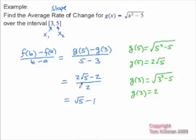And if you want, you can get this into your calculator. Square root of 5 is really close to square root of 4, so this is like 2 point something minus 1, so it'd be like 1.3 or something like that. But this is a perfectly fine answer for the average rate of change.